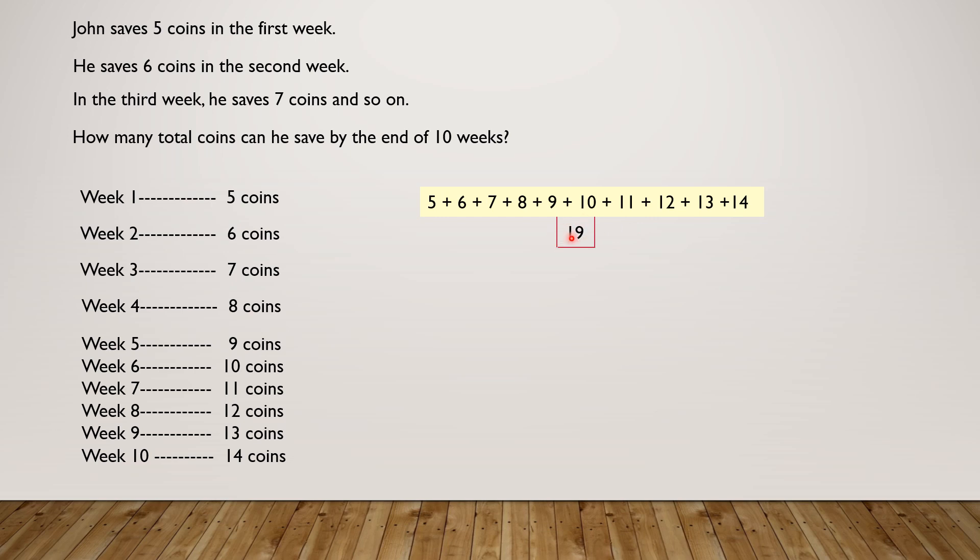Oh, 9 plus 10 equals 19. And 8 plus 11 equals 19. And 7 plus 12 equals 19. And 6 plus 13 equals 19. And 5 plus 14 equals 19. We got the number 19 five times.